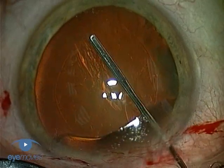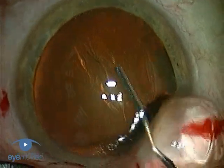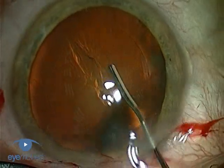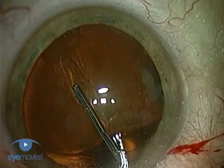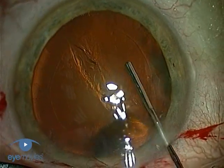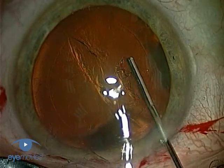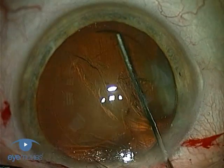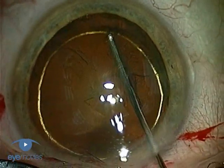Many surgeons like to begin by displacing the viscoelastic out of the chamber before making any attempt at either of the hydro manoeuvres. It's not essential to do this, but it may allow the easier flow of fluid around the lens by reducing the outflow resistance as the fluid comes out of the bag.